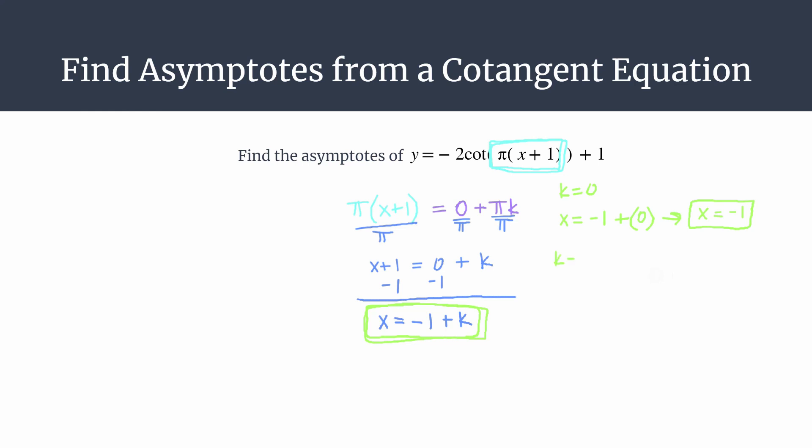Let's do when k equals 1. Simple enough. Simplifying here with negative 1 plus 1, substitute in for k. So we'd expect another asymptote here at x equals 0.